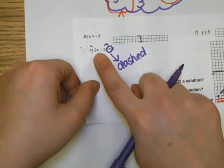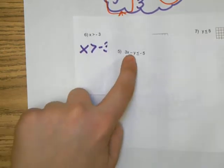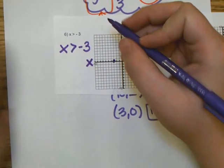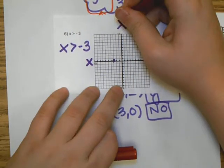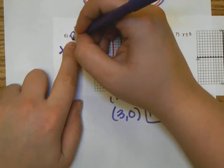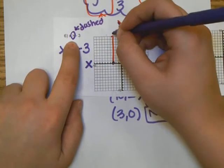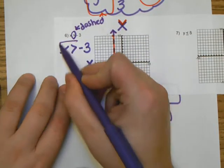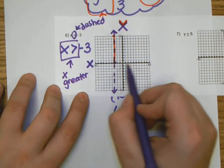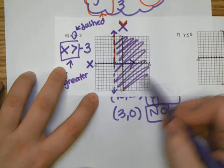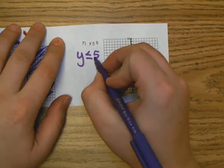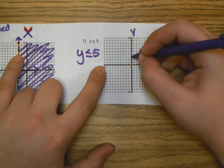Now let's look at an example with only x and no y. When there's only x, you go to the x-axis at negative 3. Remember, the top of the letter x looks like a v — it makes a vertical line. The inequality doesn't have the line underneath, so it's a dashed vertical line. Reading the inequality: x is greater than, so we look at the x-axis — numbers are greater on the right, so we shade to the right.